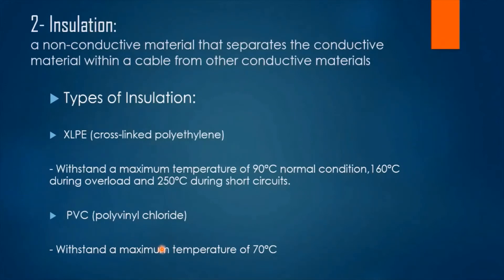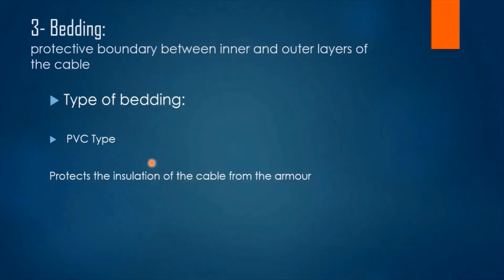However, PVC cannot withstand as much temperature — it can withstand a maximum of 70°C. The third layer is the bedding layer, which is a protective boundary between the inner and outer layers of the cable. It is always PVC type, and its main aim is to protect the insulation of the cable from the armor.